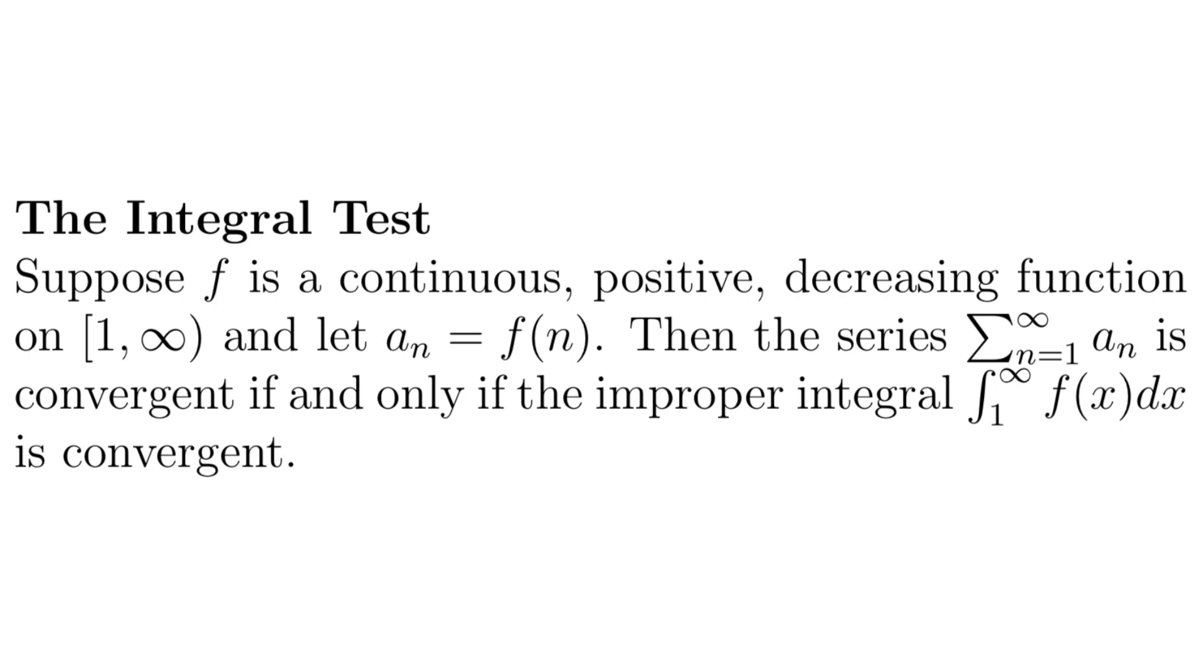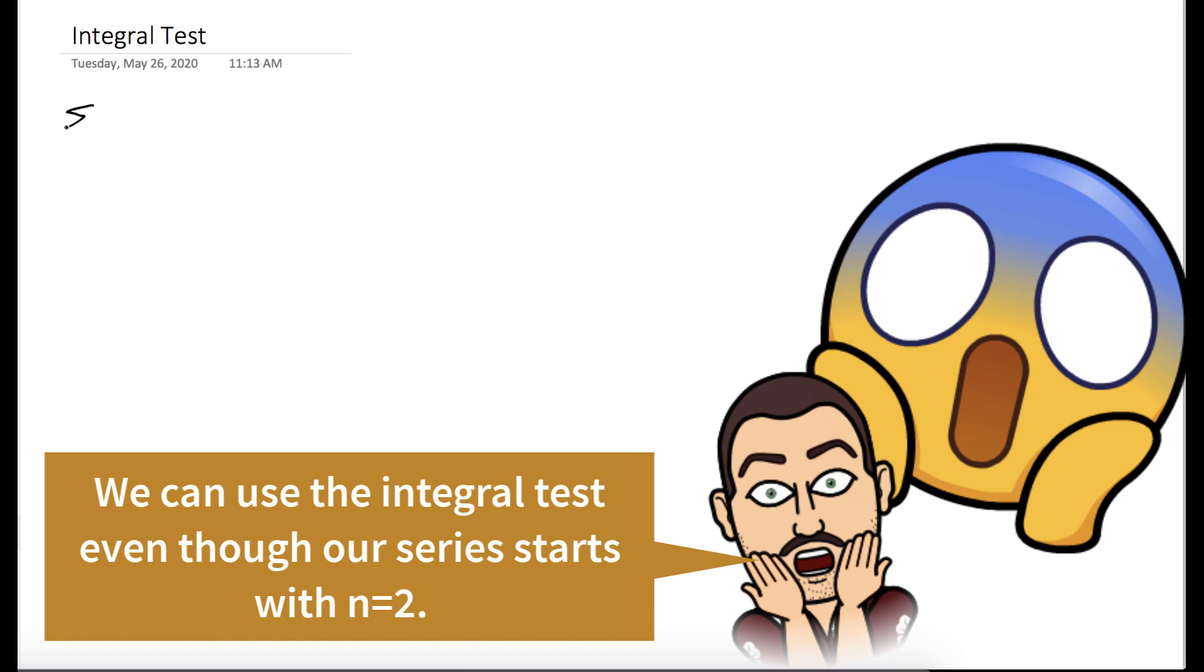And let a_n equal f evaluated at n. Then the series of a_n is convergent if and only if the improper integral, which is the integral from 1 to infinity of f(x)dx, is convergent.